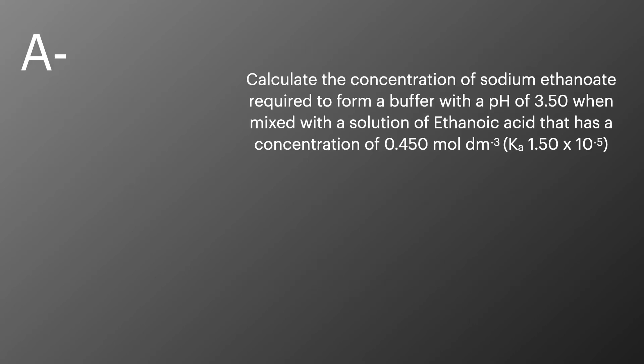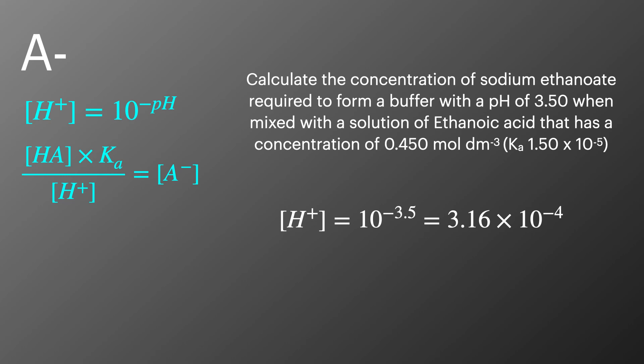In our final example then we're going to look at the concentration of A minus present in a buffer with a pH of 3.5. To do this we're going to use the reverse pH equation and then the rearranged Ka expression and the first thing we're going to do is we're going to work out the concentration of hydrogen ions in a solution with a pH of 3.5 and that's 3.16 times 10 to the minus 4.